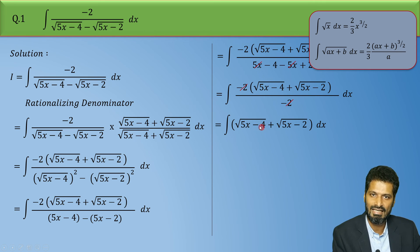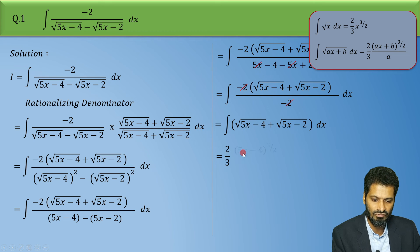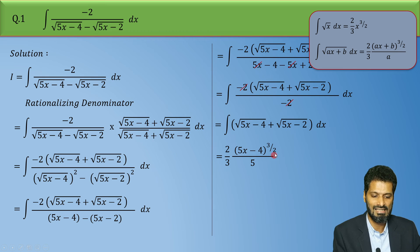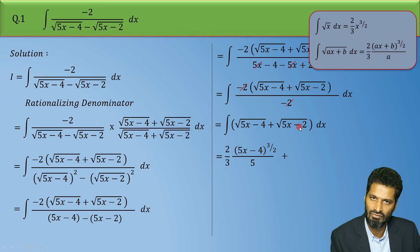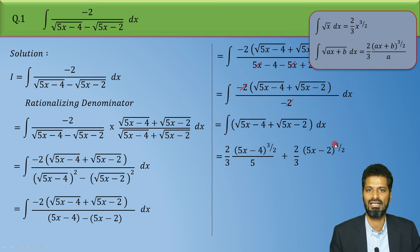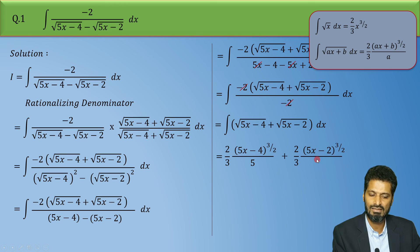So the integration of root of (5x minus 4) gives (2/3) times (5x minus 4) raised to 3/2, divided by 5, since the coefficient of x is 5. Similarly, applying the same formula to root of (5x minus 2), we get (2/3) times (5x minus 2) raised to 3/2, divided by 5, plus C.